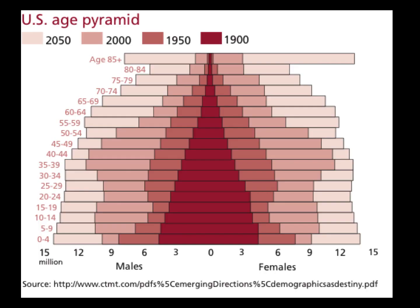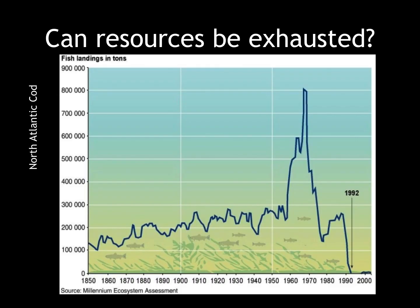The United States went through a demographic change similar to that of Japan over the course of the last century, but our end distribution is more column-like, indicating that we have approximately equal old and young people. This is caused by moderate birth rates, immigration, and high life expectancies.